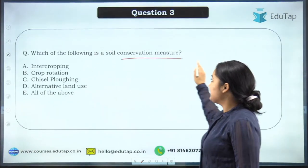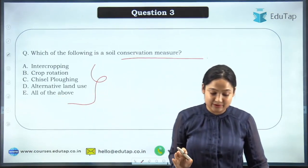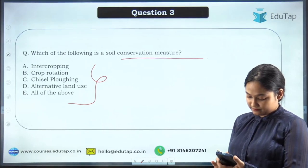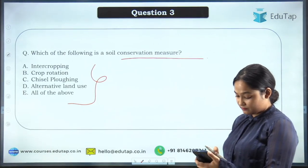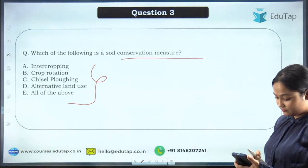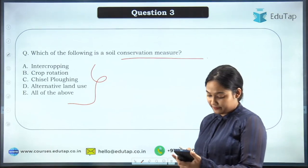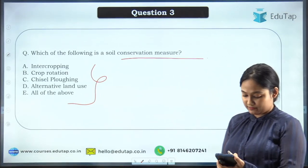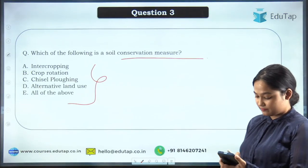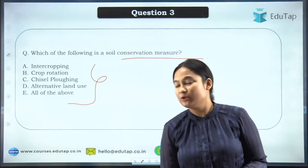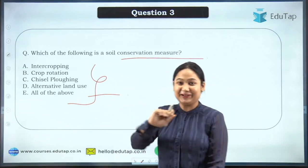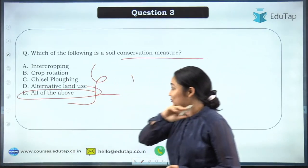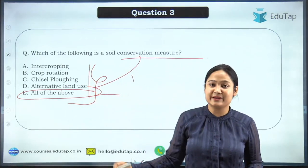The next question asks which of the given options are soil conservation measures. All the given options are soil conservation measures — that is the correct answer. Now we will discuss the remaining conservation measures including mulching, chisel plowing, crop rotation, and others.